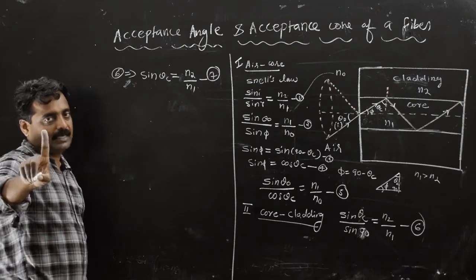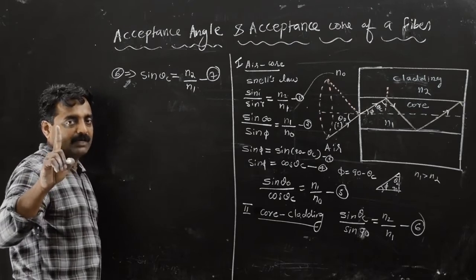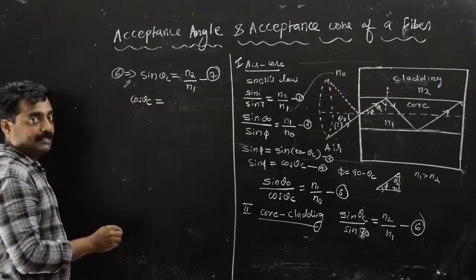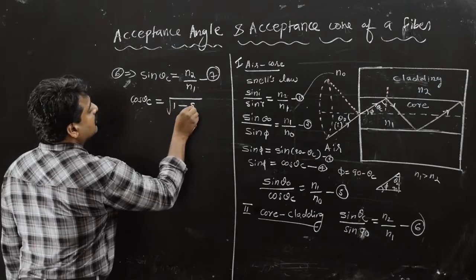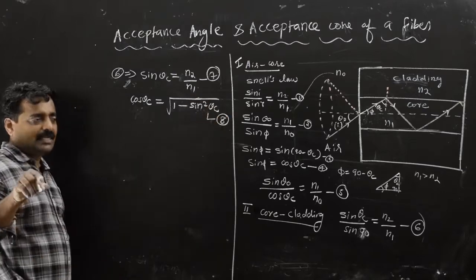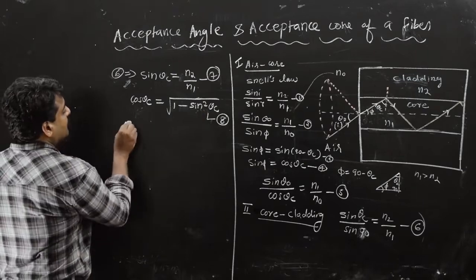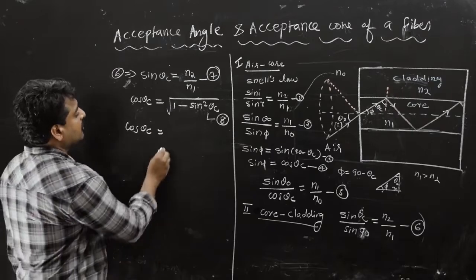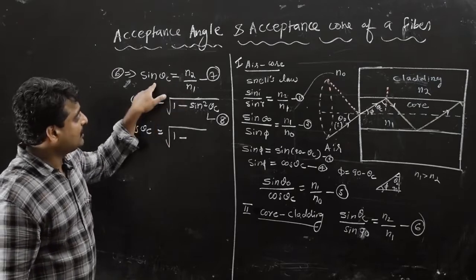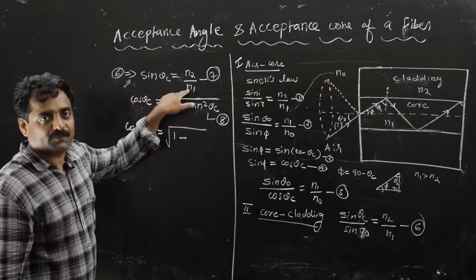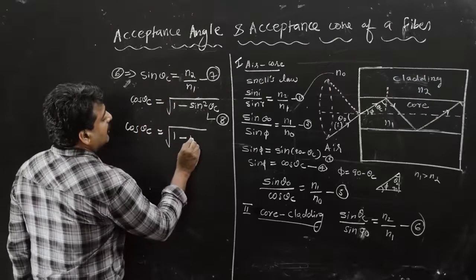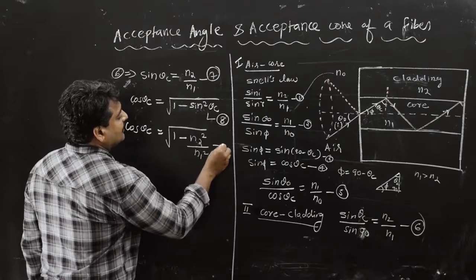We know that sin squared theta plus cos squared theta equals 1, so cos squared theta equals 1 minus sin squared theta (equation 8). Therefore cos theta c equals the square root of (1 minus sin squared theta c), which equals the square root of (1 minus n2 squared by n1 squared). That is equation number 9.